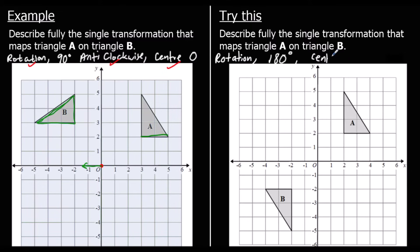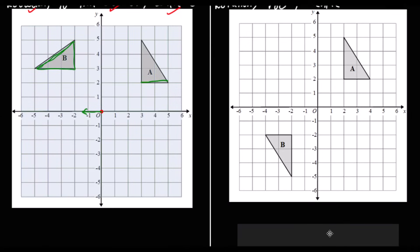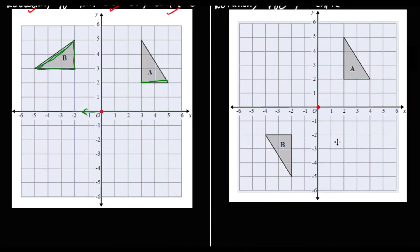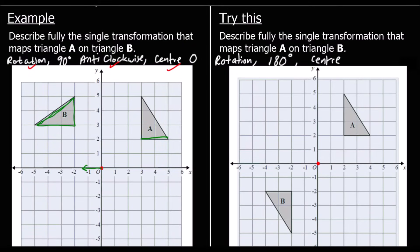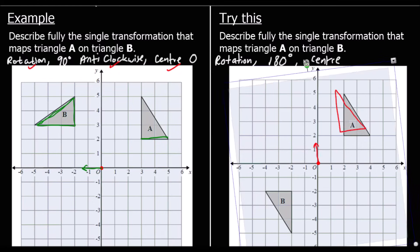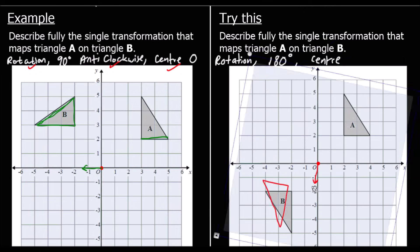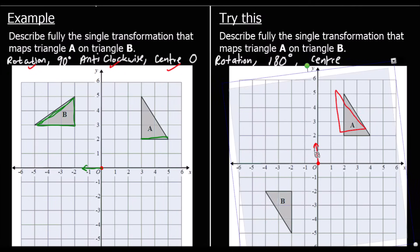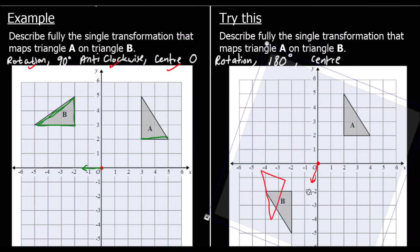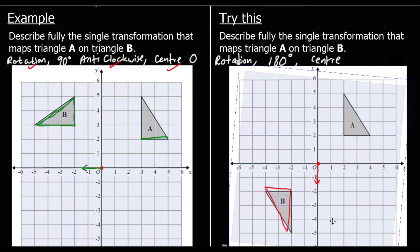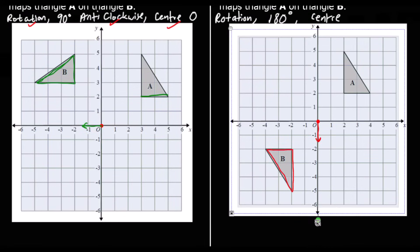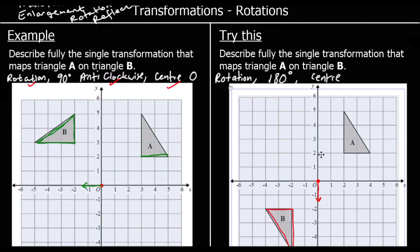What's the centre? Where do we have to hold the tracing paper? Let's grab some tracing paper and try it at the origin. I'm going to draw a line going up and draw around shape A. If I rotate this shape 180 degrees, the arrow would be going down. Will shape A go to shape B? Yes, it will. So it's 180 degrees, and the centre is again at the origin.